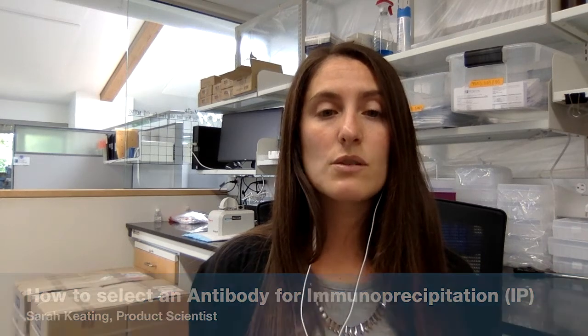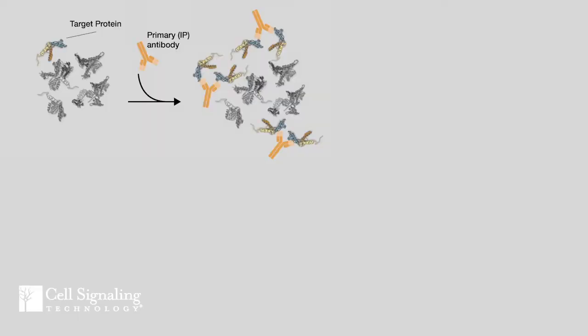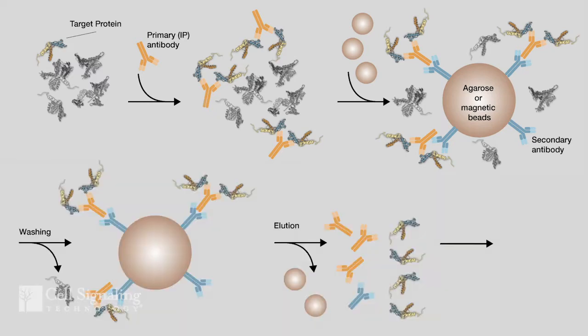Immunoprecipitation, or IP, can be used to enrich your protein of interest prior to analysis. There are many variations of IP, but the basic concept is to bind the target protein with an antibody — which I'll refer to as the IP antibody — and then precipitate the resulting immune complex on beads derivatized with proteins that bind to the antibody. Following IP, proteins can be analyzed by Western blot, mass spectrometry, or other assays. IP can aid detection of your protein if it is expressed at low abundance, or if you're working with a limited sample.